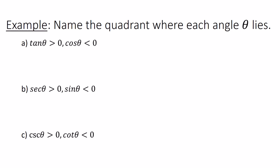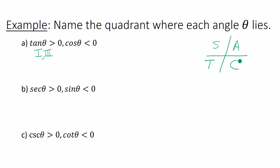We're going to name the quadrant where each angle theta lies. Given that tan(θ) > 0 and cos(θ) < 0, where is tangent positive? That would be quadrant 1, because everything is positive there, and quadrant 3. Where is cosine negative? Cosine is positive in 1 and 4, so it must be negative in 2 and 3. The only quadrant where tangent is positive yet cosine is negative is quadrant 3. So theta is in quadrant 3.